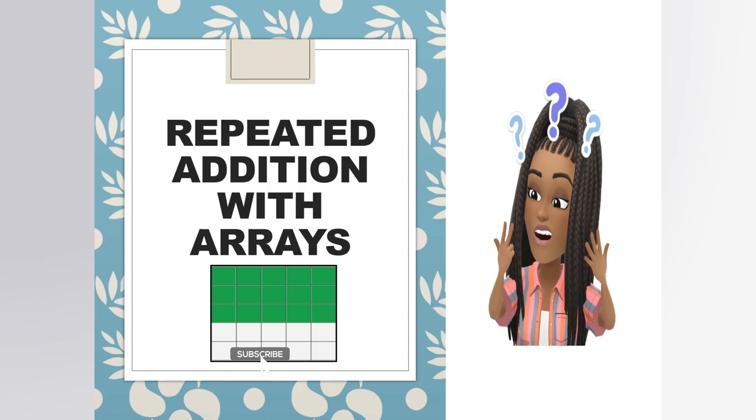Arrays are groups of objects that are shown in rows and columns of the same length. You can describe an array by using a repeated addition number sentence.